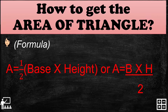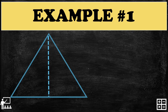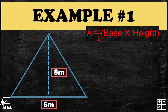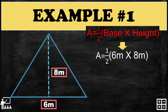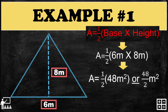Let's start with Example 1 so you can fully understand how to find the area of a triangle. Example number 1: you have a triangle whose base is 6 meters and a height of 8 meters. We use the formula one half times the base times the height, or base times height over two. Substitute the measurements: one half times open parenthesis 6 m times 8 m close parenthesis.